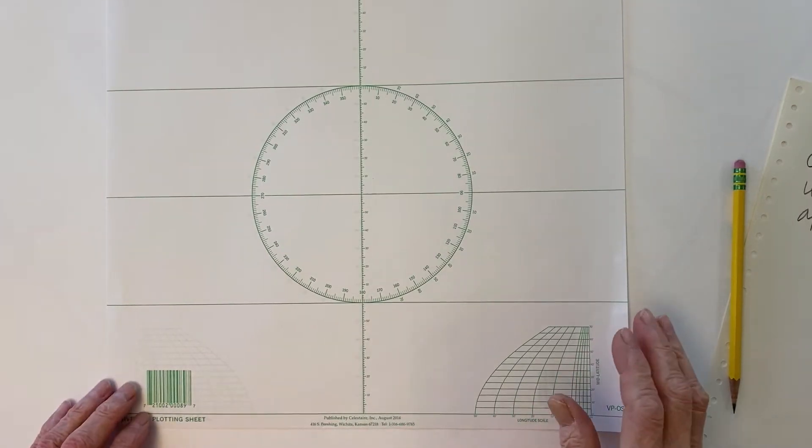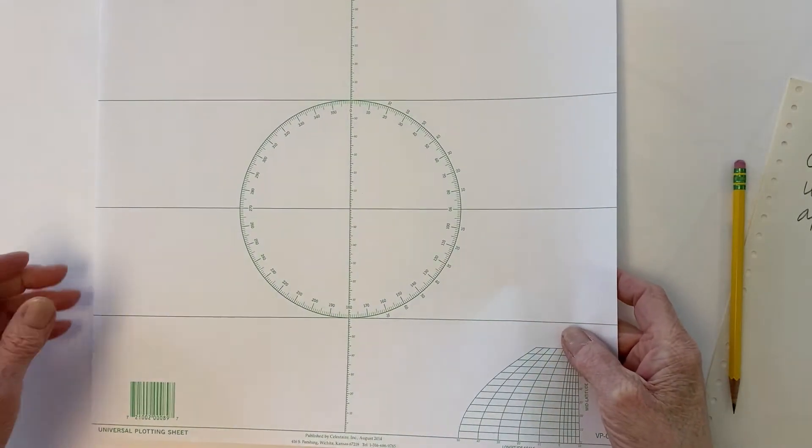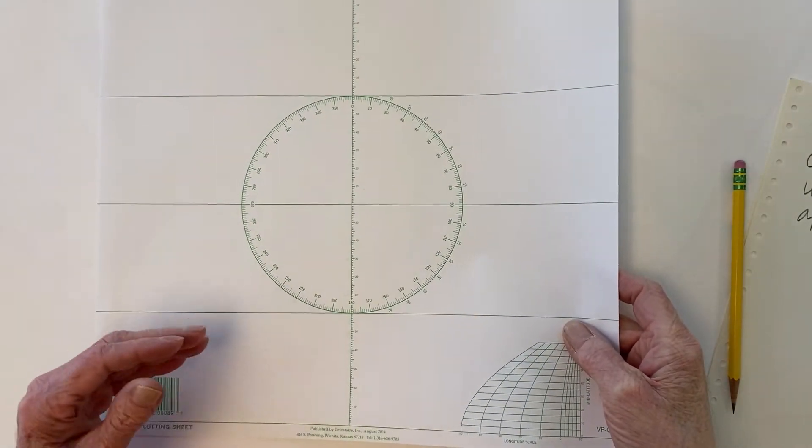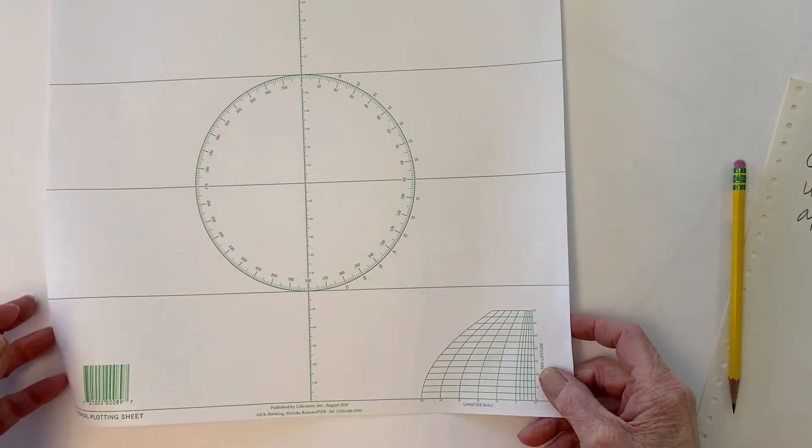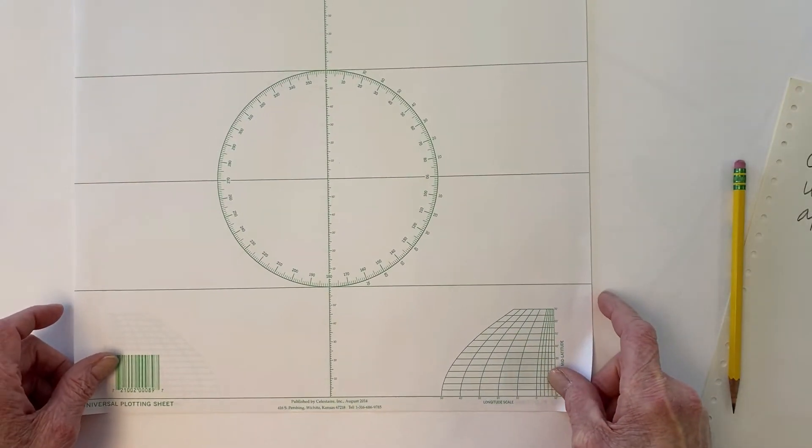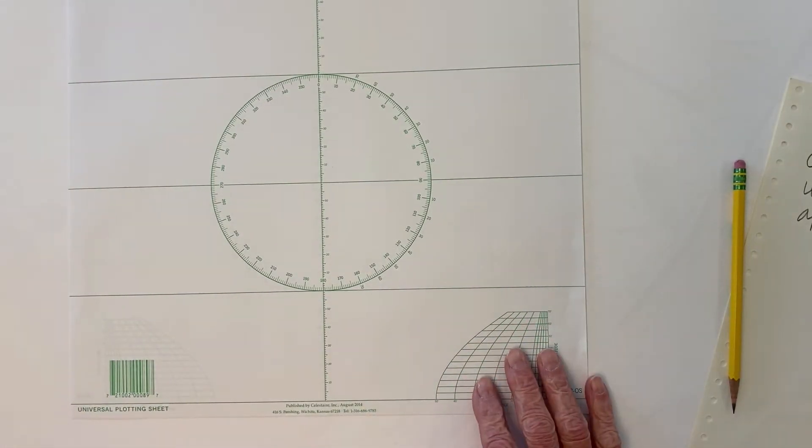Okay, so here's an illustration of how to use the universal plotting sheets. These sheets are about 13 inches square, roughly. They are printed on both sides. They come in pads of 50 for about $7 or $8. And so these are called universal plotting sheets.